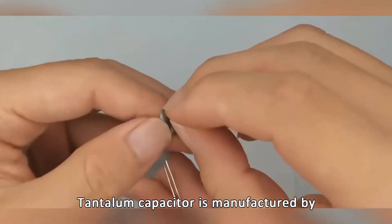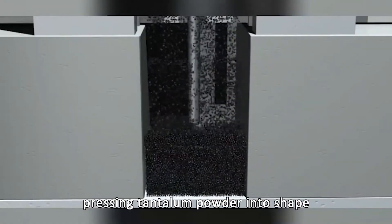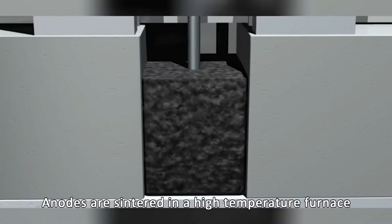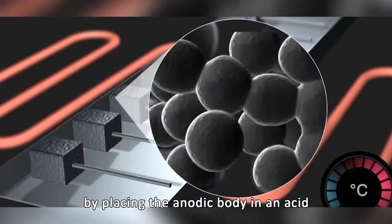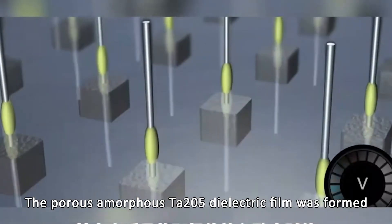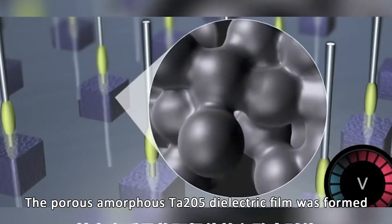Tantalum capacitor is manufactured by pressing tantalum powder into shape. Anodes are sintered in a high-temperature furnace. The dielectric is energized by placing the anodic body in an acid. The porous amorphous TAR-205 dielectric film was formed.